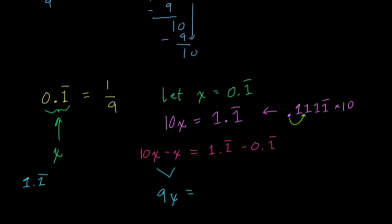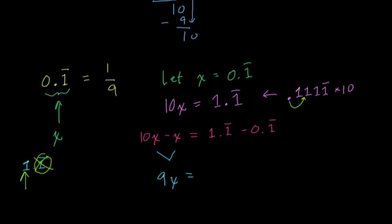If we were to subtract the 0.1 repeating section, this whole section just goes away, and what's left is 1. So 9x equals 1.1 repeating minus 0.1 repeating, which is just 1.